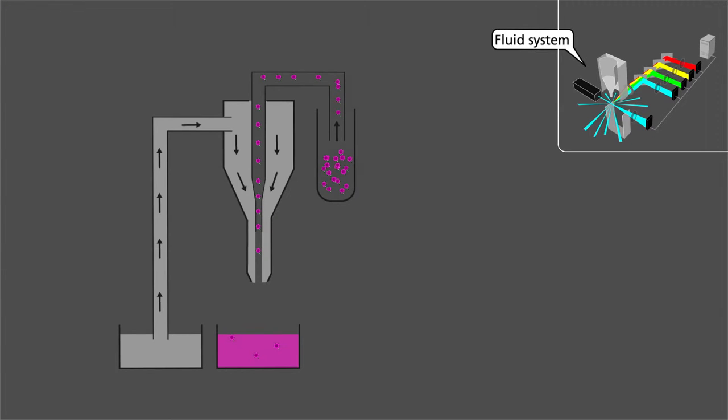In the cytometer, there is a circulating flow of liquid called sheath passing in front of the laser. The sample that we want to analyze is injected into the sheath of the cytometer.